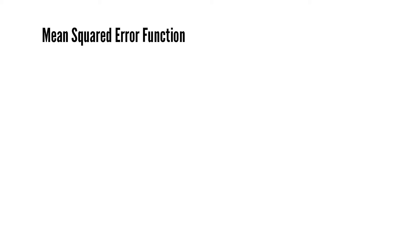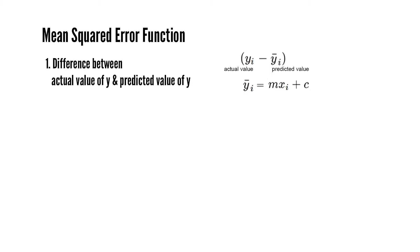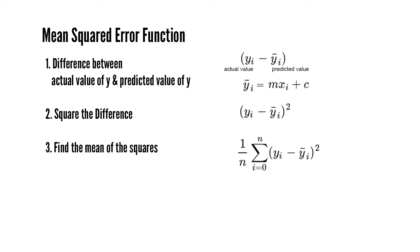There are three steps in the MSE function. First, find the difference between the actual value of y and the predicted value of y for any given value of x — the predicted value being mx + c. This difference is the distance between the predicted and actual value. Next, we square this difference to avoid negative values, and finally we find the mean of the squares for every given value in x — that's why the name mean squared error.